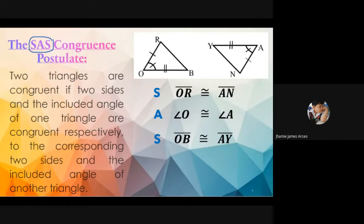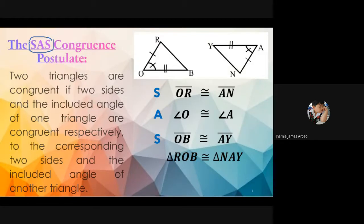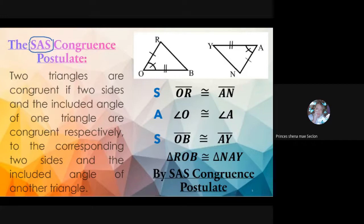Since we already know that the side, angle, and side are congruent, we can say triangle ROB is congruent to triangle NAY. Eklon answers: by SAS congruence postulate. The correct answer is by SAS congruence postulate. When triangles are proven congruent, the reason is the applicable postulate or theorem.